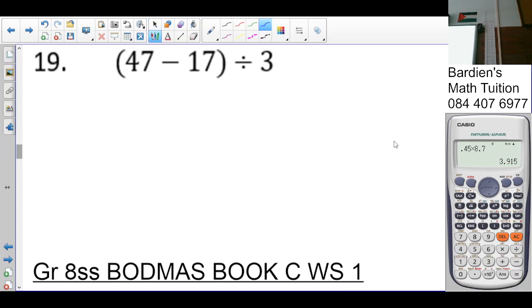Next one, what needs to be done first? Brackets. So forty-seven minus seventeen. Thirty divided by three. What's thirty divided by three? Ten.